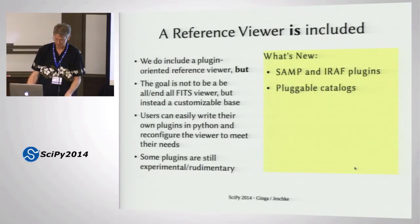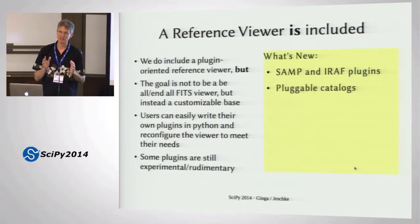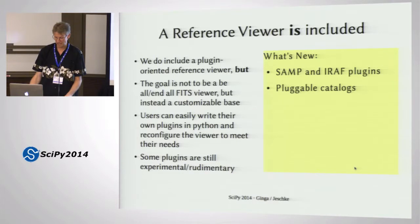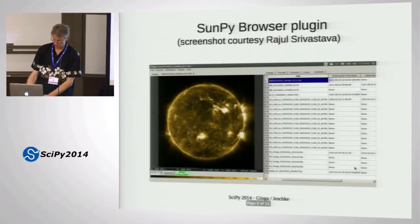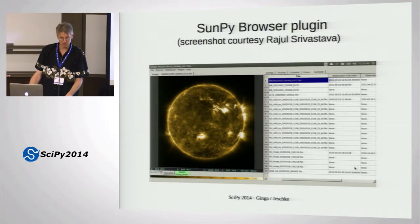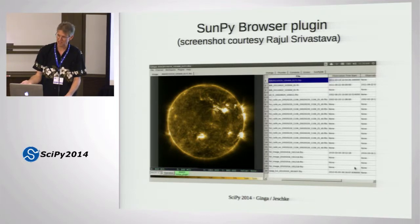We do have a reference viewer that's gotten a lot of attention, which I'm trying to shift more toward the toolkit. At Subaru we needed this kind of application, so we made it a general plugin-based thing where you can substitute all kinds of plugins to do basically everything in the viewer. We now have some SAMP and IRAF plugins for interacting with IRAF and SAMP applications. One example is the SunPy Google Summer of Code student Rajul who is working on a SunPy database browser. They browse their database in the plugin, it populates a table of observed objects, and you can single-click or double-click one and it loads into the main reference viewer window.